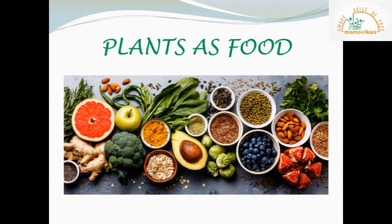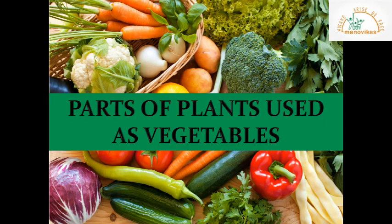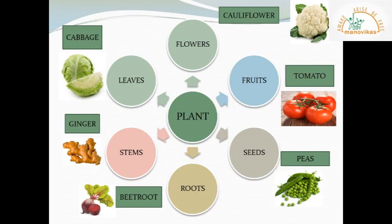In the previous lesson we learned about the different parts of a plant: roots, stem, leaves, flowers, fruits and seeds. We get food from different parts of a plant. This is a chart showing the different parts of a plant used as vegetables. The root example is beetroot; stems — ginger; leaves — cabbage; flowers — cauliflower; fruits — tomato; seeds — peas.